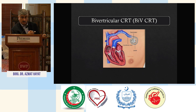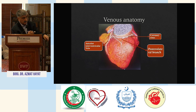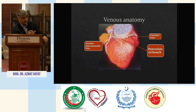Starting from CRT — this is how a CRT device is implanted. There are three leads: the atrial lead, the coronary sinus lead, and the RV lead. The only limitation in a CRT device is the availability of a good vein. The ideal vein is normally the posterolateral branch of the coronary sinus, where if the LV lead is fixed, it gives the best optimized results.